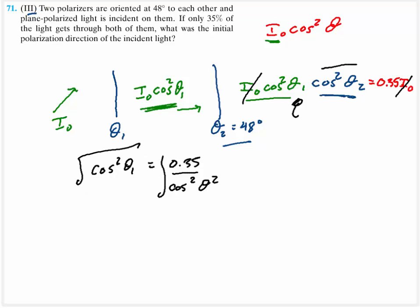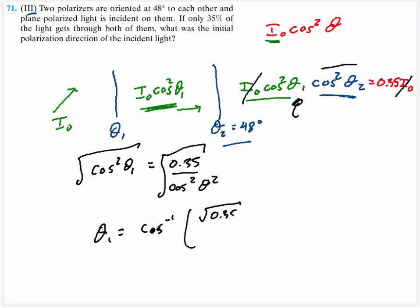Take the square root of both sides, then take the inverse cosine of both sides. Theta 1 is going to be equal to arc cosine of the square root of 0.35 divided by cosine of 48 degrees — notice the square root removes one of those squares. We end up with 28 degrees.